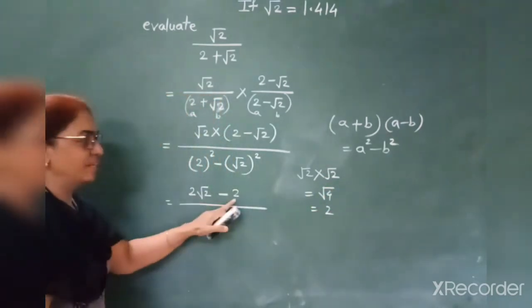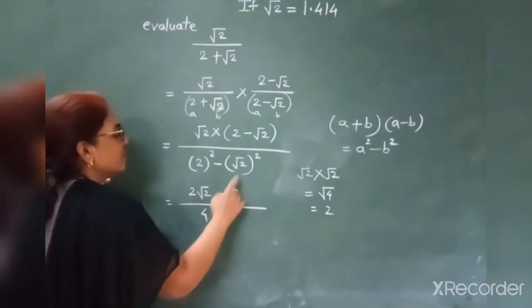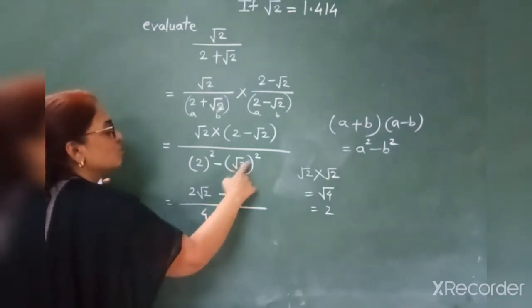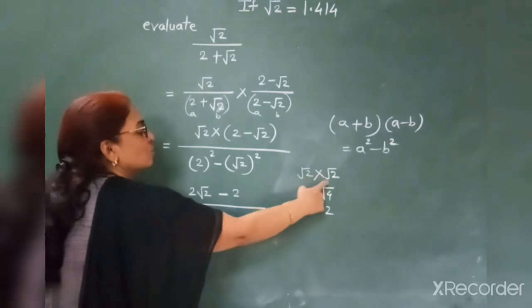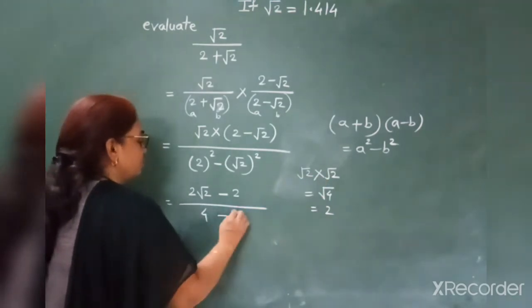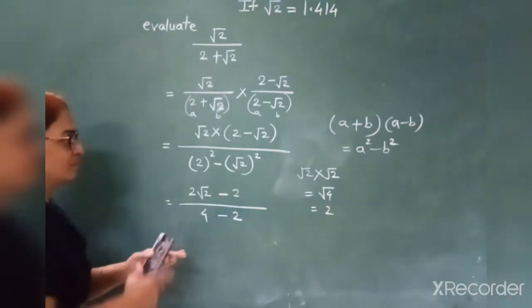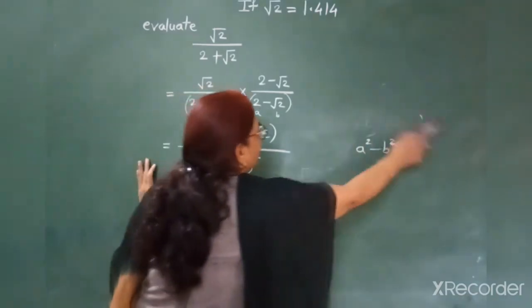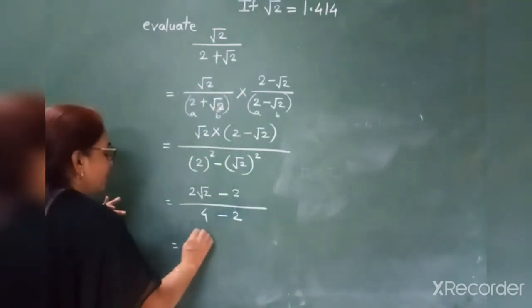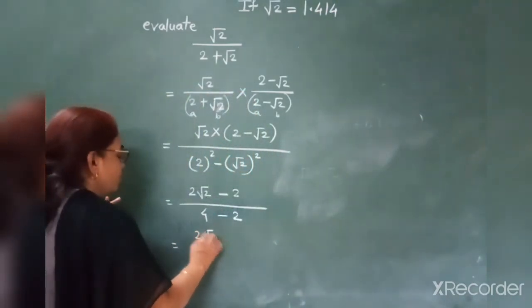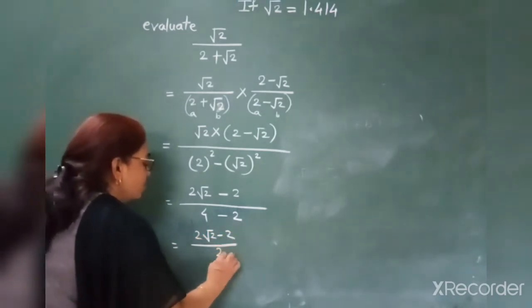That is why I have written 2. Now 2² becomes 4, minus root 2 squared means root 2 into root 2, which is root 4, that is 2. So denominator becomes 4 minus 2 equals 2. The numerator is 2 root 2 minus 2, and the denominator becomes 2.